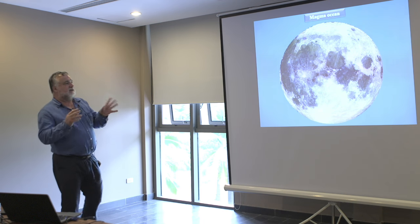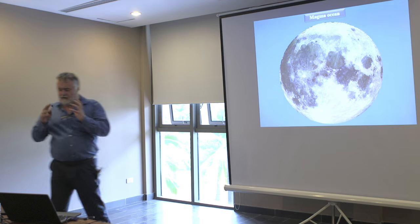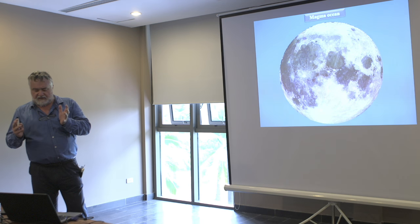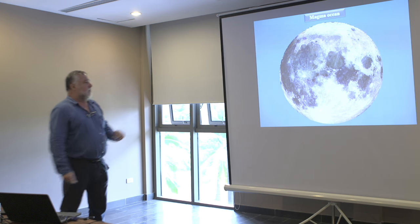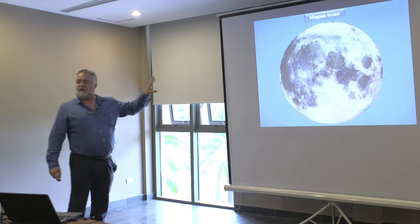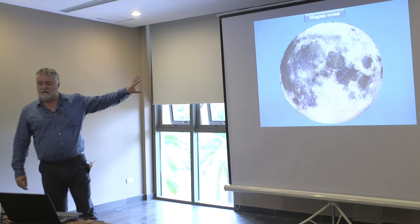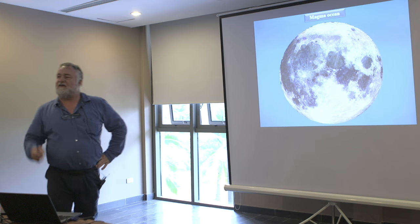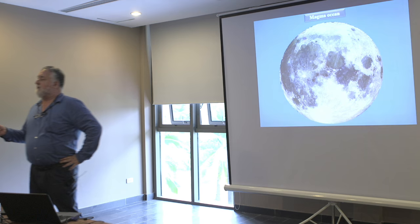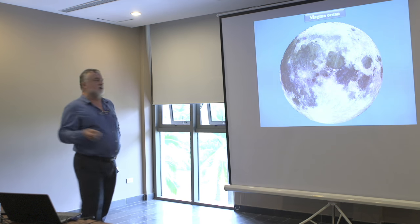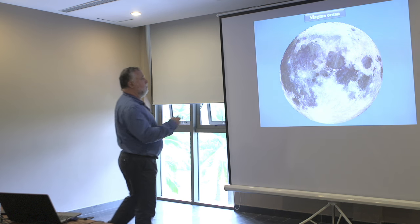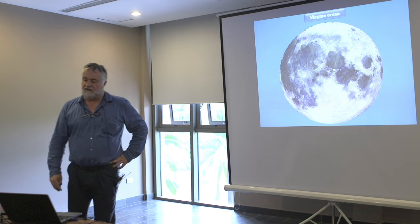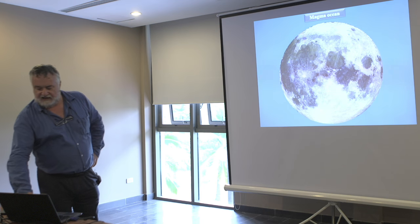Now I will change subject a little. We have seen that differentiation appeared very early in the planet. Now we will look at the Moon. The Moon is interesting because there is no plate tectonics, so the rocks and structure remain since the beginning of the history of the satellite.